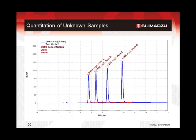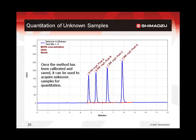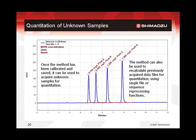Acquisition of the chromatogram of an unknown sample using the calibrated method will permit calculation of the concentrations of the analyte peaks based on the equation of the calibration curve line. The calibrated method can also be used in a reprocessing mode, either one file at a time or in a post-acquisition sequence, to recalculate the quantitative results of previously acquired data files.